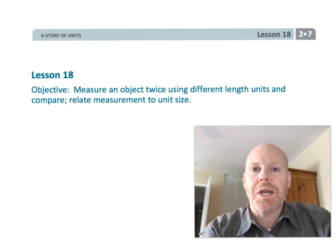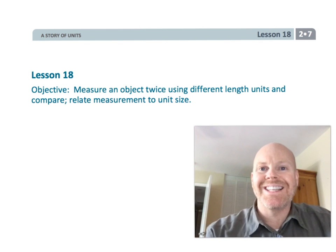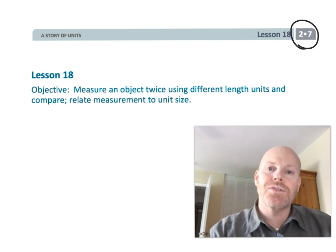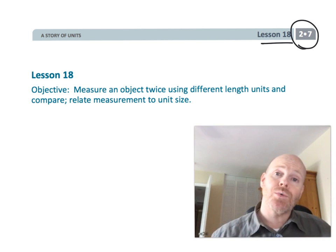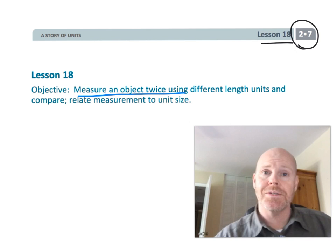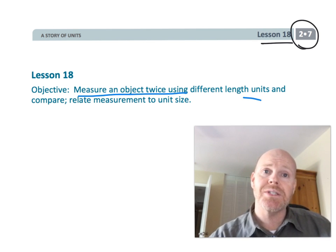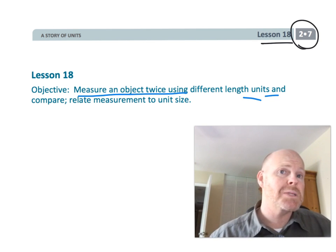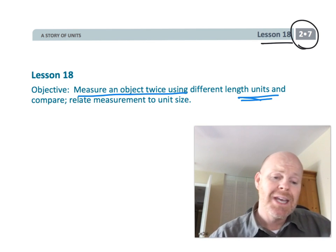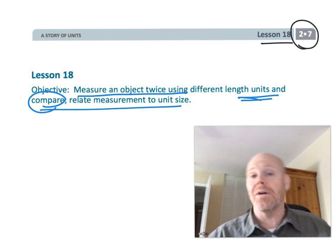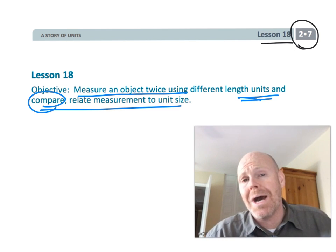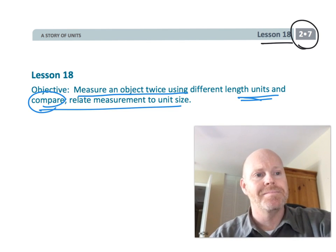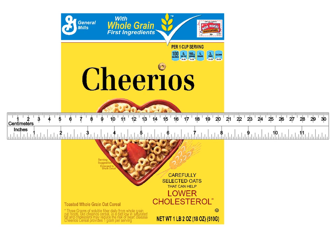This is second grade module 7 lesson 18. In this lesson, students are going to take an object and measure it twice — once using centimeters and the other time using inches — and then compare the two measurements. Even though it's the same object, they'll get two different numbers, and we're going to talk about why.